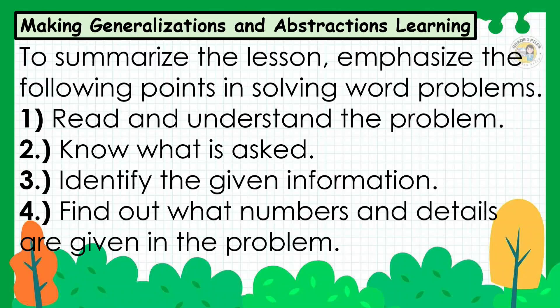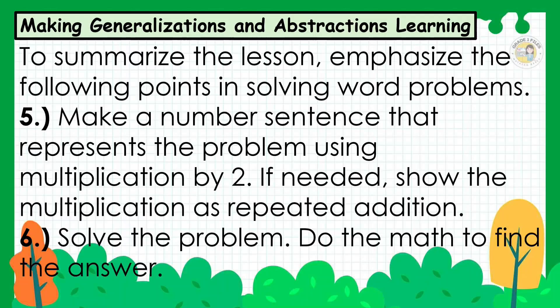To summarize the lesson, emphasize the following points in solving word problems. Number 1: Read and understand the problem. Number 2: Know what is asked. Number 3: Identify the given information. Number 4: Find out what numbers and details are given. Number 5: Make a number sentence representing the problem using multiplication by 2; if needed, show the multiplication as repeated addition. Number 6: Solve the problem — do the math to find the answer.